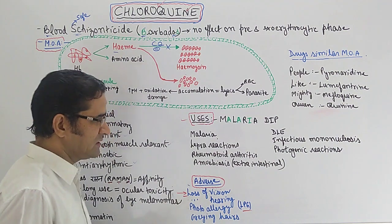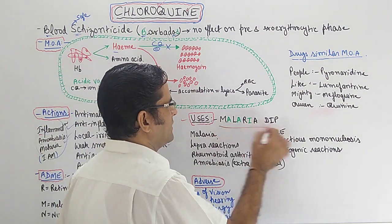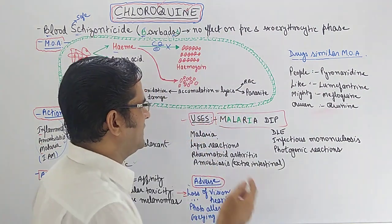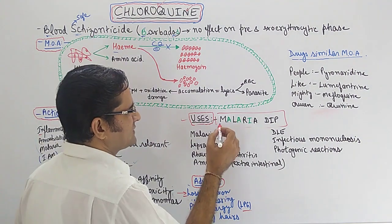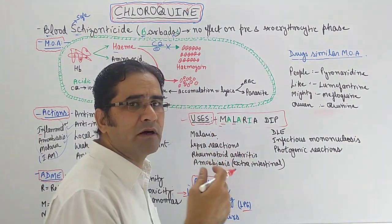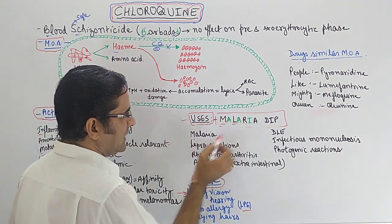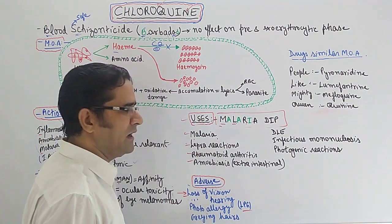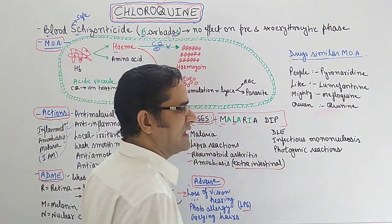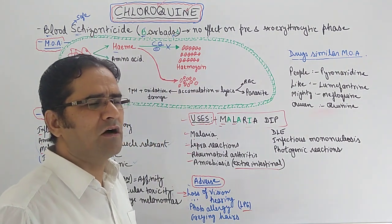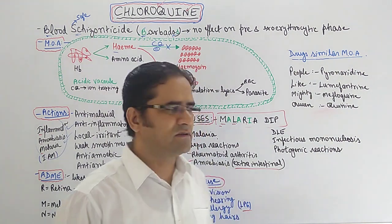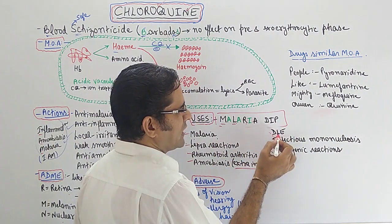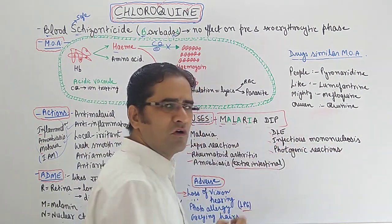For uses, remember the mnemonic 'MALARIA DIP.' In MALARIA: M stands for malaria, L stands for lepra reactions, R stands for rheumatoid arthritis, A stands for amoebiasis — specifically extra-intestinal amoebiasis. A common exam question asks which drug is used for extra-intestinal amoebiasis, and the answer is chloroquine.